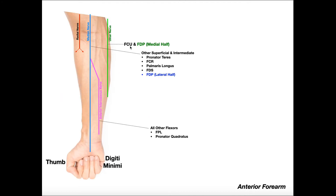Let's talk about the muscles innervated by the ulnar nerve. The most obvious one is flexor carpi ulnaris (FCU), which is fully innervated by the ulnar nerve.